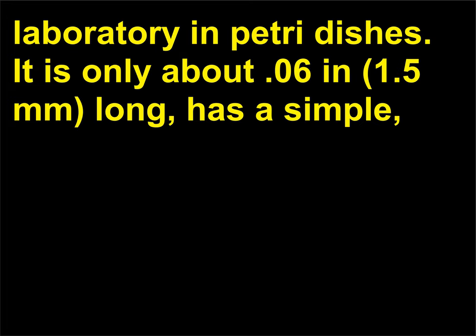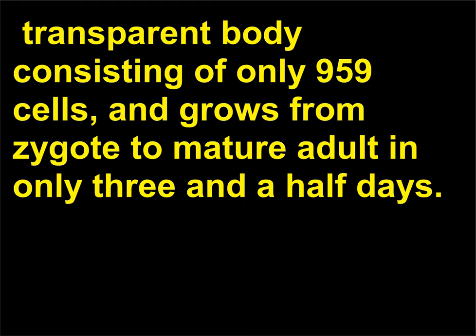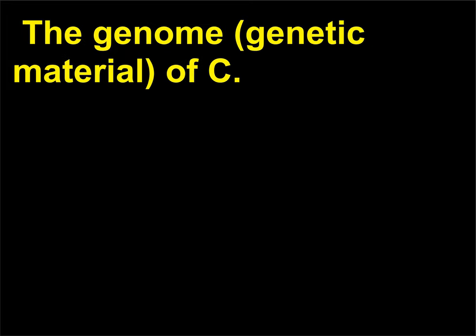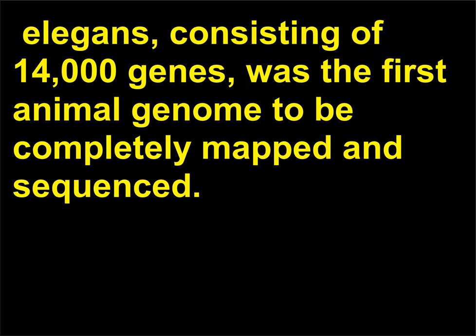It is only about 0.06 inches long, has a simple transparent body consisting of only 959 cells, and grows from zygote to mature adult in only 3.5 days. The genome — genetic material — of C. elegans, consisting of 14,000 genes, was the first animal genome to be completely mapped and sequenced.